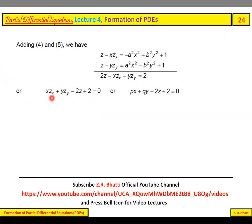This gives us 2z - xz_x - yz_y = 2, which is the first-order partial differential equation obtained by eliminating two arbitrary constants from the given equation. This is the required PDE.